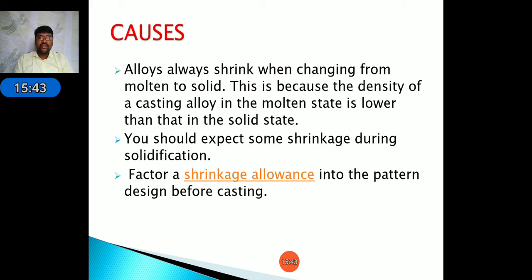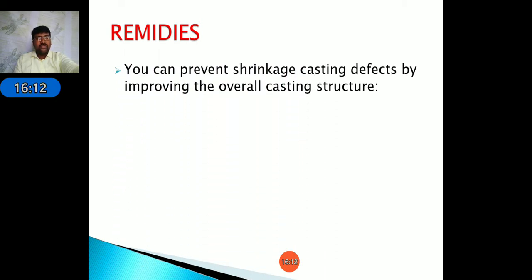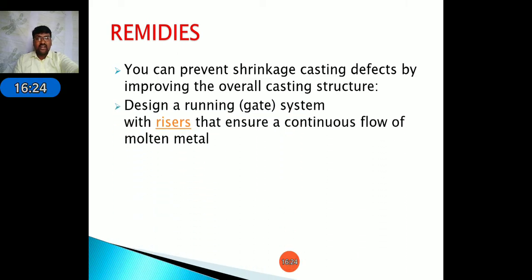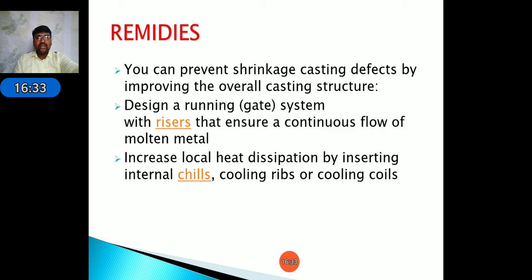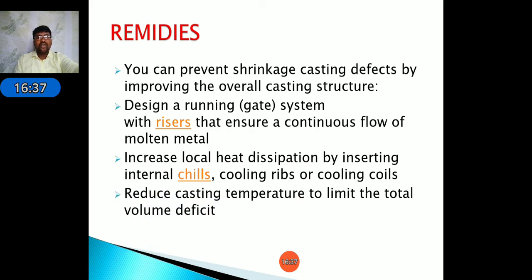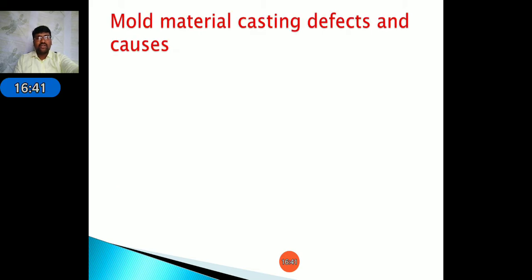There are two types of shrinkage: liquid shrinkage, compensated by using a riser where molten metal is stored; and solid shrinkage, compensated by providing a shrinkage allowance at the time of designing the pattern. Remedies for shrinkage defects include: improving the overall casting structure including pattern preparation and runner/riser system design; increasing local heat dissipation by inserting chills, cooling ribs, or cooling coils; and reducing casting temperature to limit total volume defect.